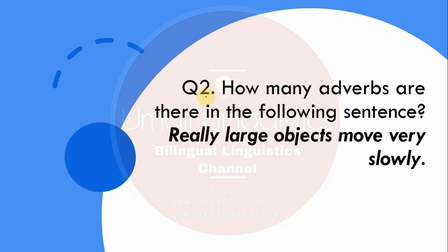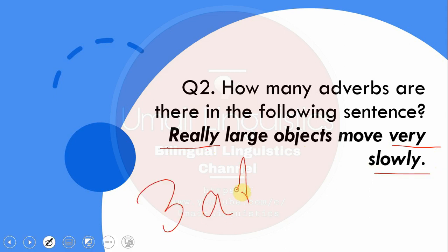Question 2: How many adverbs are there in the following sentence — 'Really large objects move very slowly'? There are three adverbs: 'really' at the beginning, 'very', and 'slowly'. Those are the three adverbs in this sentence.